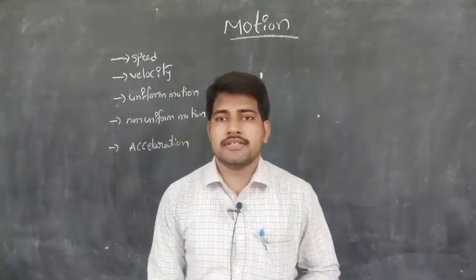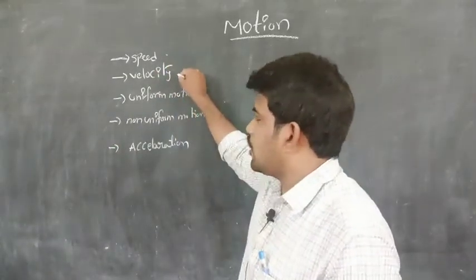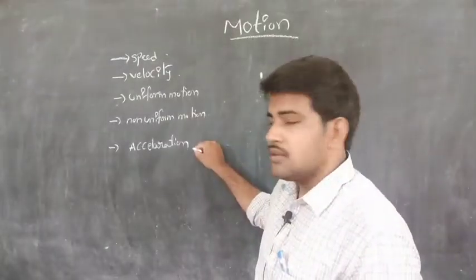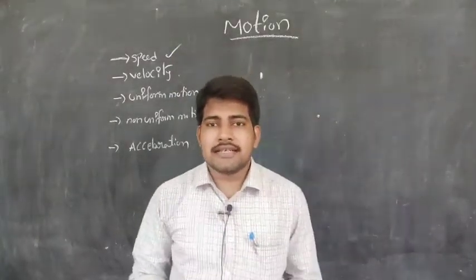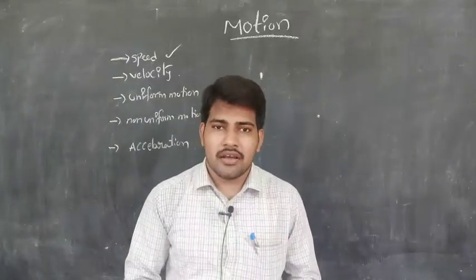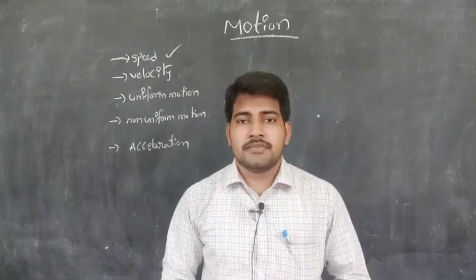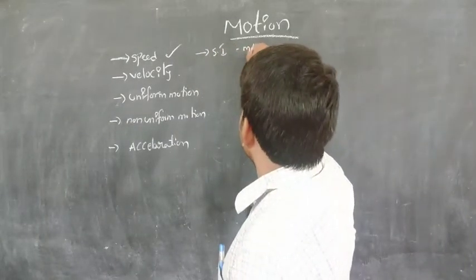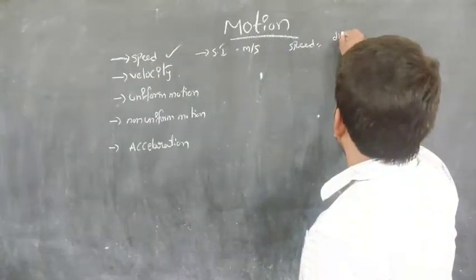In this class you will understand five important concepts: speed, velocity, uniform motion, non-uniform motion, and acceleration. First of all, what is speed? Speed of an object is the distance traveled by an object per unit time. Speed is a scalar — it has no direction, so it cannot be zero. The SI unit of speed is meter per second.